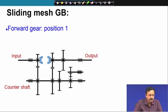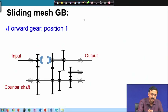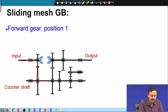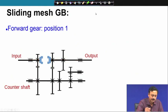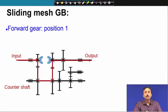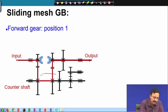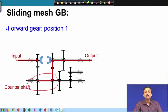This is the configuration when you are in forward gear position 1. The input motion goes from here to the counter shaft — as the name suggests, it rotates in the opposite direction. It is transmitted here to the output shaft. You can easily recognize that this gear train in this configuration is a compound gear train. There is a shaft which carries two gears, so you can calculate the gearing ratio.